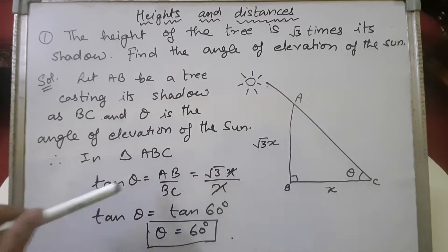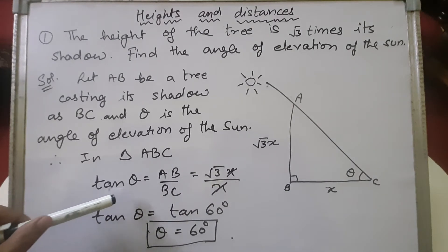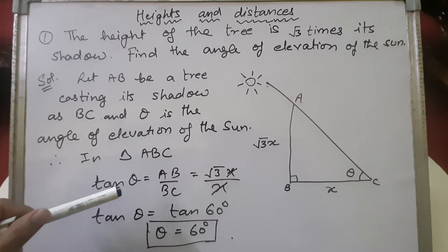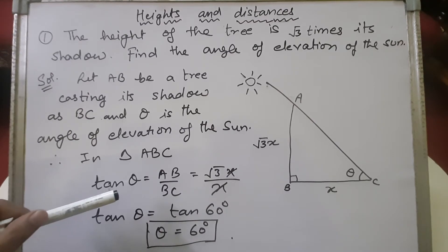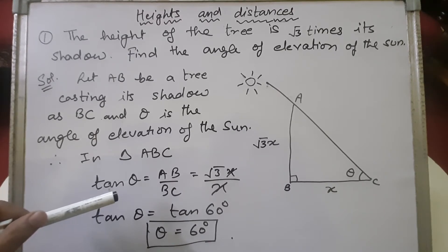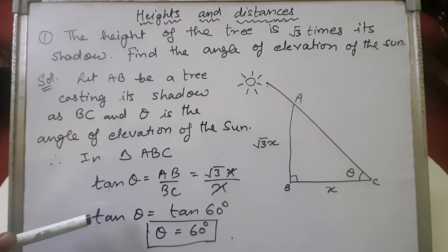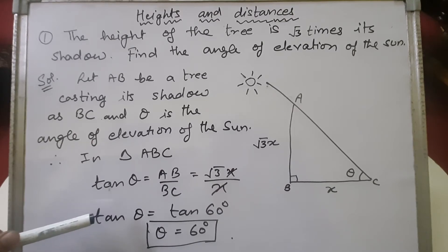So, tan theta equals perpendicular upon base, which is AB upon BC. Substituting AB as root 3x and BC as x, the x cancels and we get tan theta equals root 3. Since tan 60° = root 3, comparing both sides we get theta equals 60 degrees. Therefore, the angle of elevation of the sun is 60 degrees. Please note this down.